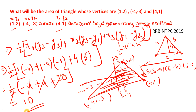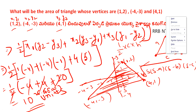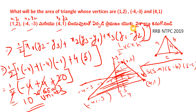So the answer is 10 square units. Option A is 10 units, option B is 10 square units, option C is 10 meters, option D is 10 square meters. So the answer is 10 square units. Note this formula carefully for coordinate geometry — there are many questions that repeat from this topic. 100% note and practice this formula.